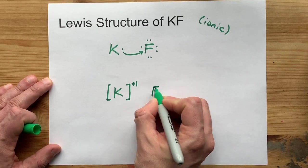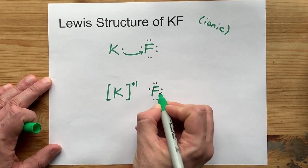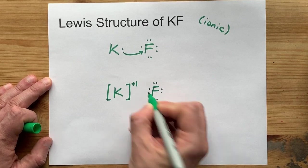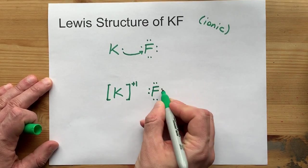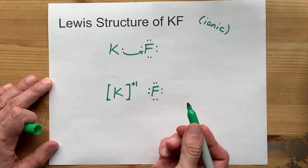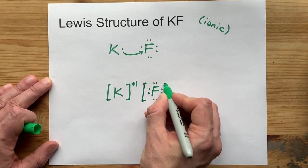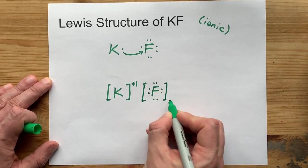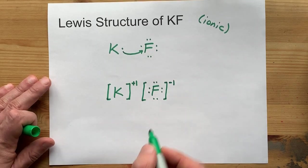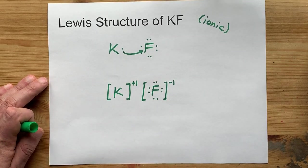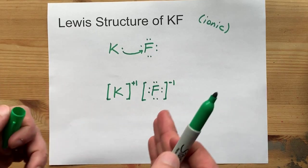Fluorine brought 7 electrons on its own and took 1 from potassium. That gives it a full 8, and by the octet rule, it is stable as well. It gets square brackets, and because it took an extra electron, it has a minus 1 charge. Everyone's happy, which means we're happy.